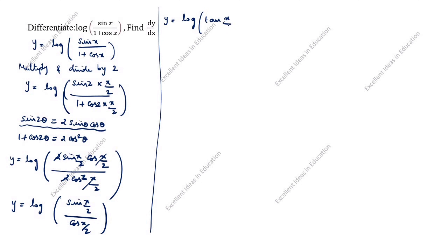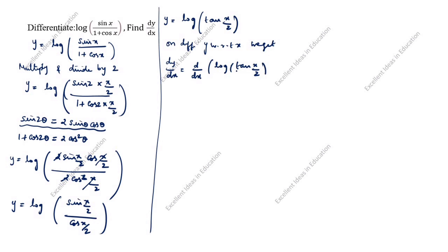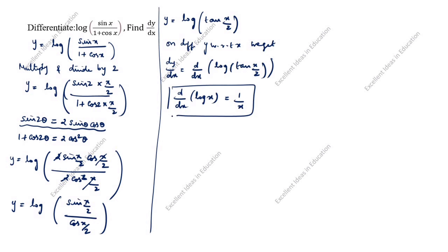On differentiating y with respect to x we get dy by dx. The formula of d by dx of log x is 1 by x. So applying this: dy by dx is equal to 1 by tan(x by 2), multiplied by d by dx of tan(x by 2). This uses the chain rule.